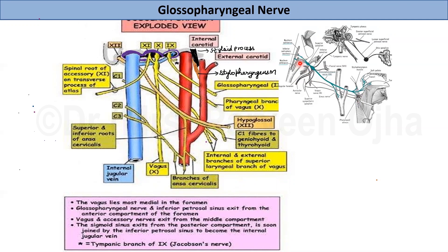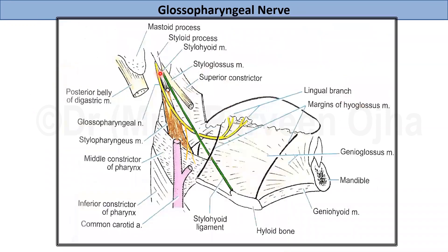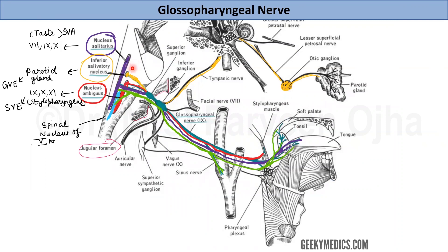After passing deep to the styloid process, the nerve courses over the superior constrictor and middle constrictor muscles of the pharynx, passing along these muscles up to the tongue. It also reaches the soft palate, where it gives its final branches — the lingual and tonsillar branches. This completes the full course: origin from the medulla via three nuclei, through the jugular foramen, in relation to major blood vessels, and finally in relation to the pharyngeal muscles, tongue, and soft palate.